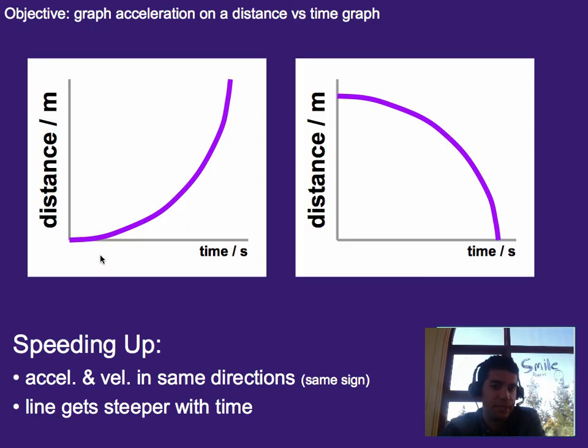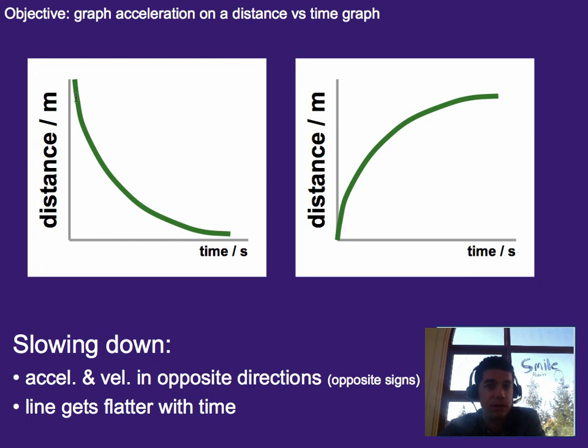So steepness means speed. If instead you wanted something slowing down, you would want a line that gets flatter and flatter. So in this case, we've got something that started really steep in the negative direction and it's flattening out to zero. If it flattens out completely, it would be not moving at all.